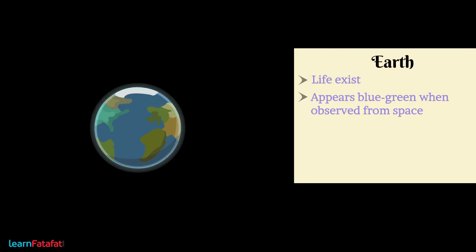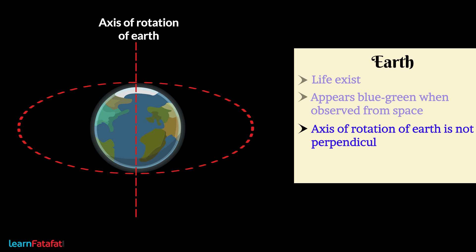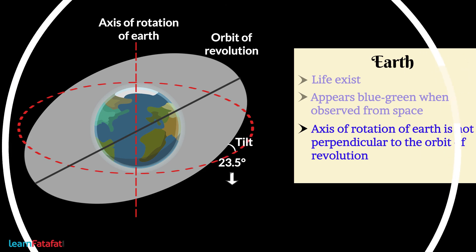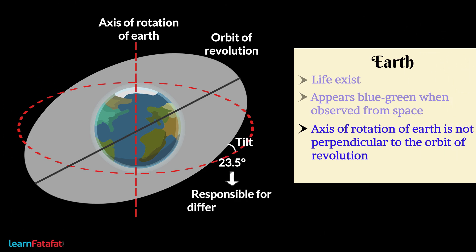The axis of rotation of Earth is not exactly perpendicular to the orbit of revolution. In fact, it is slightly tilted at some angle. This tilt is responsible for different seasons on Earth.